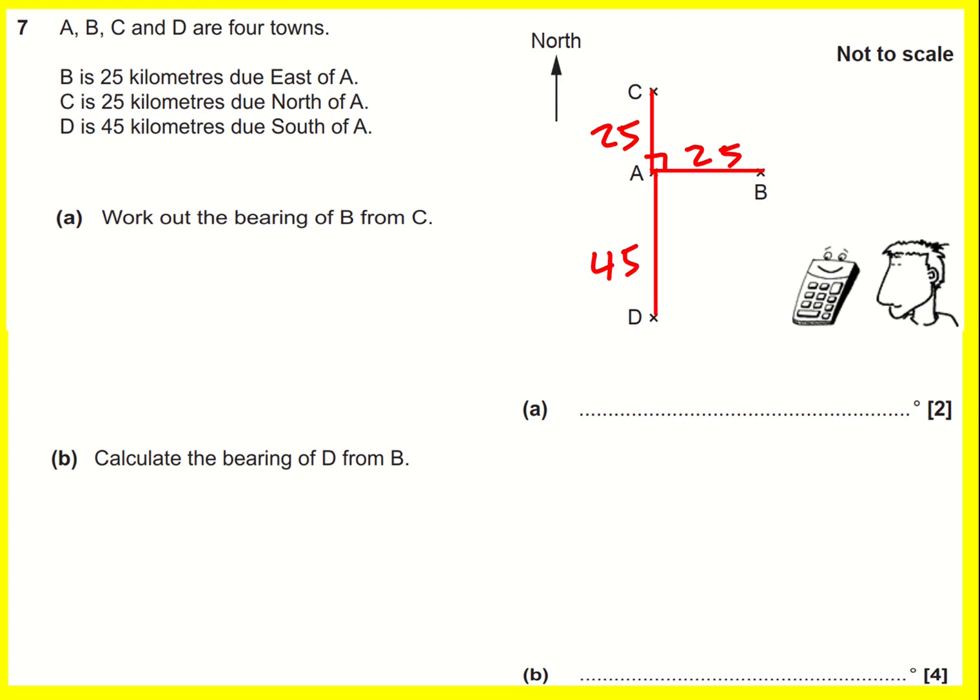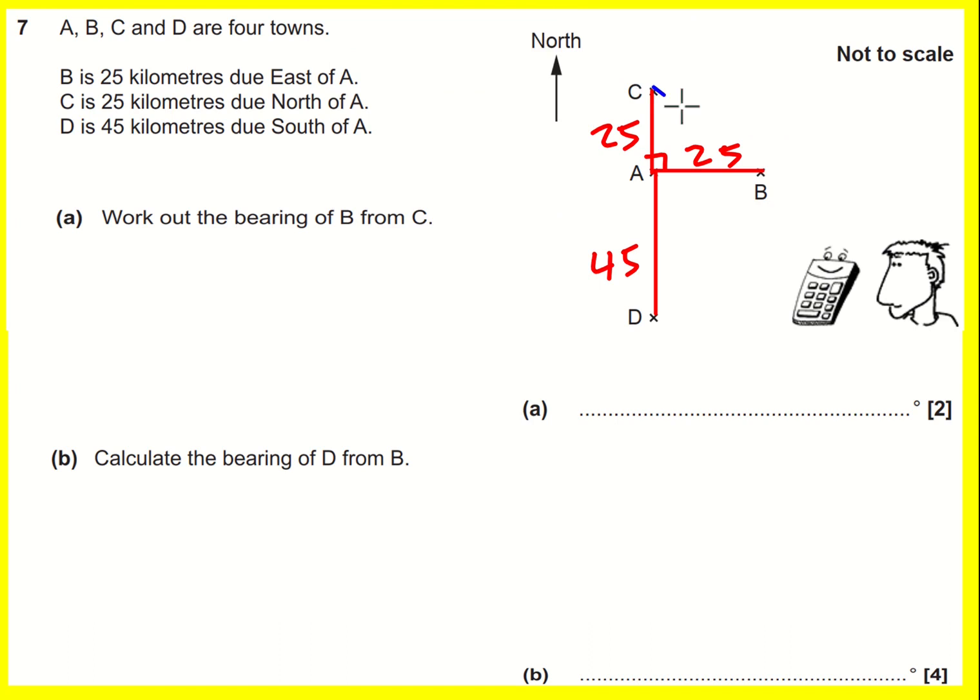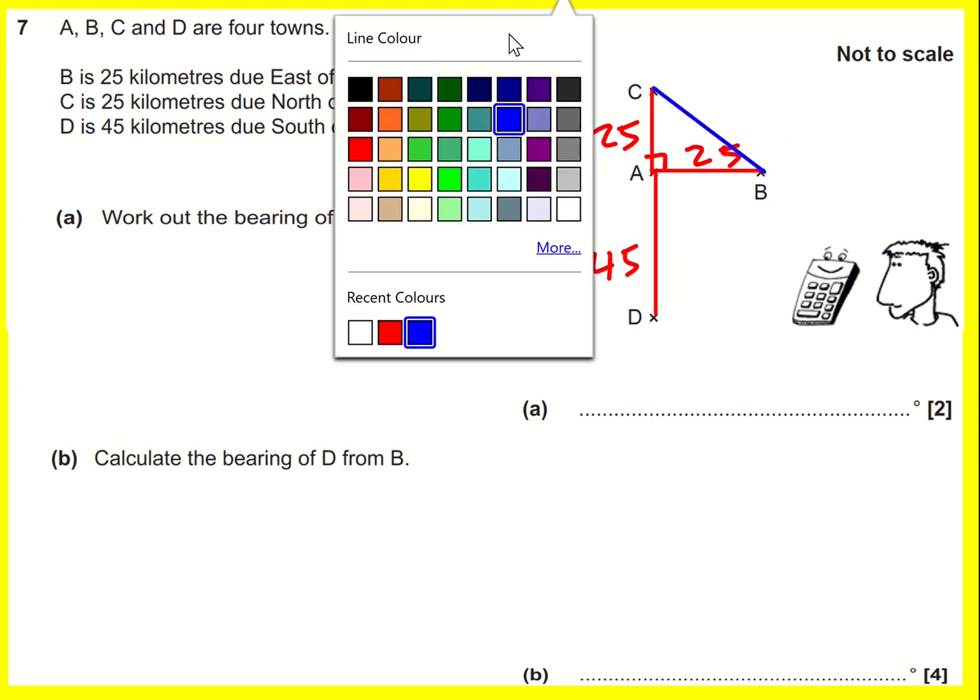Work out the bearing of B from C. This means I start at C and I want to get to B. I'm going to draw my north line.